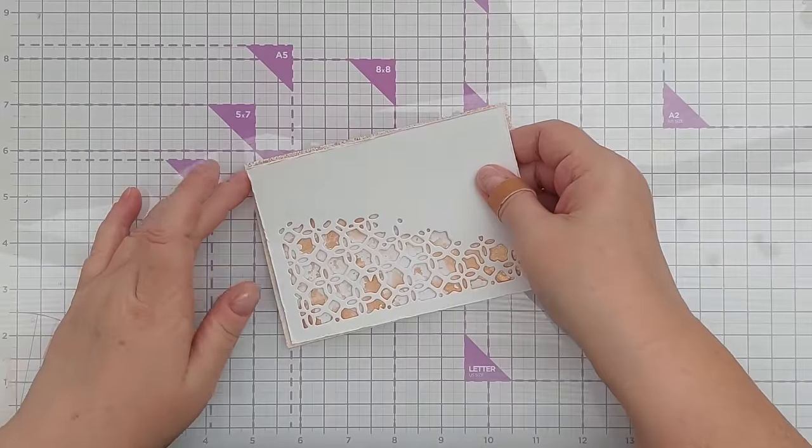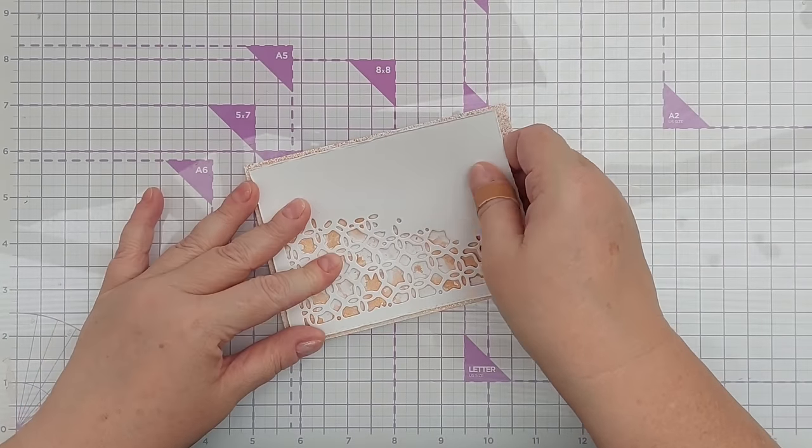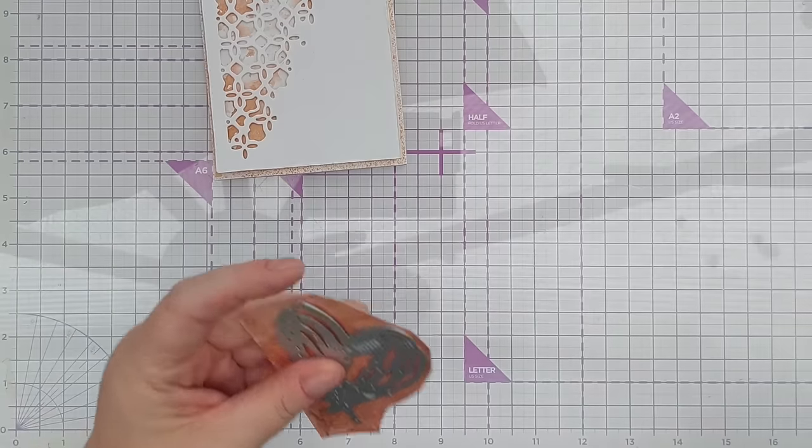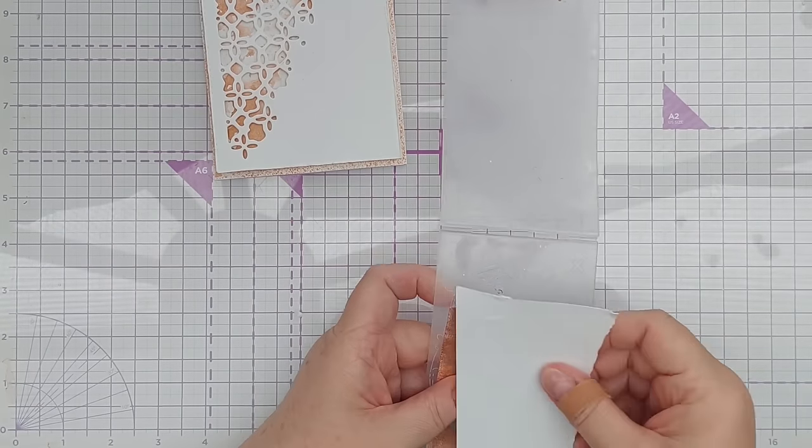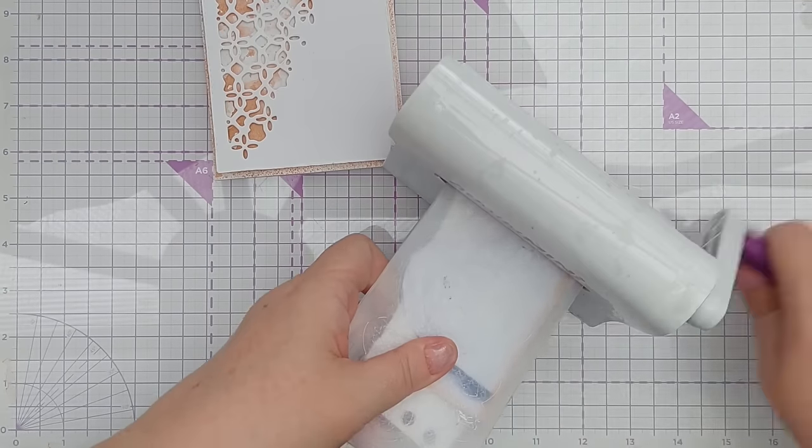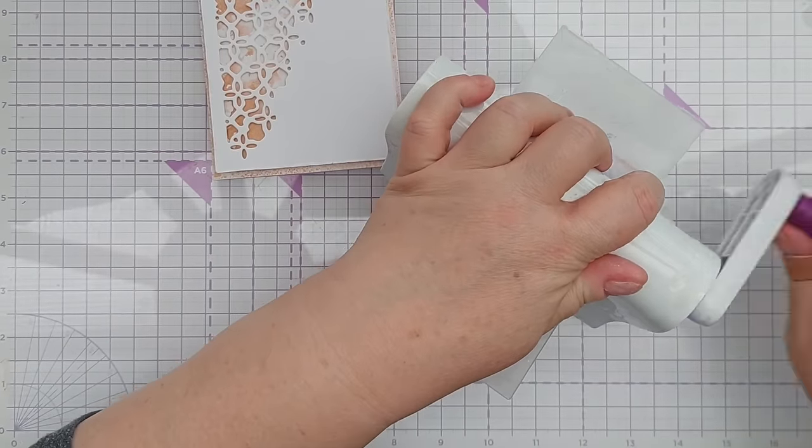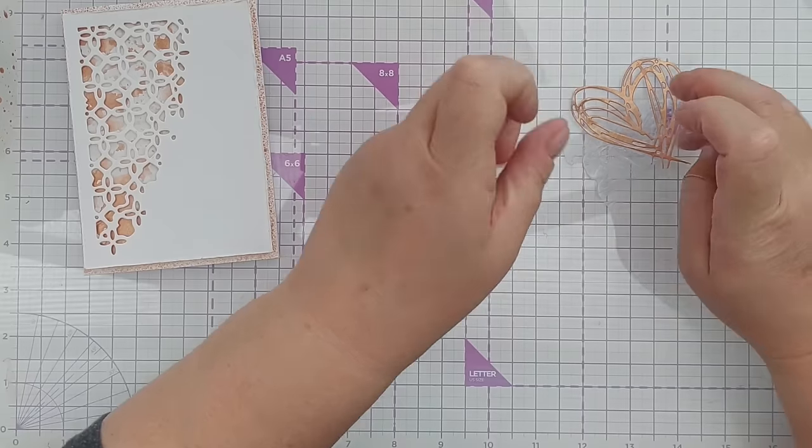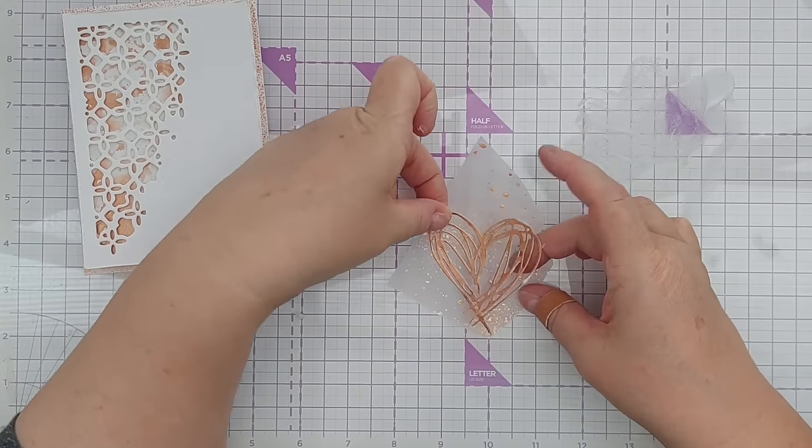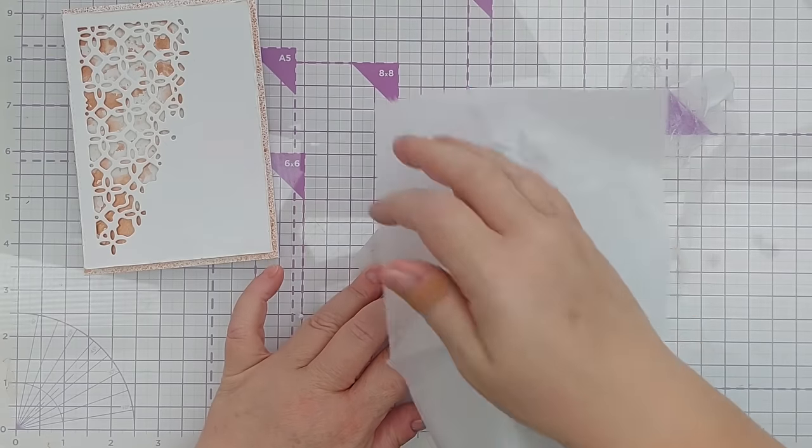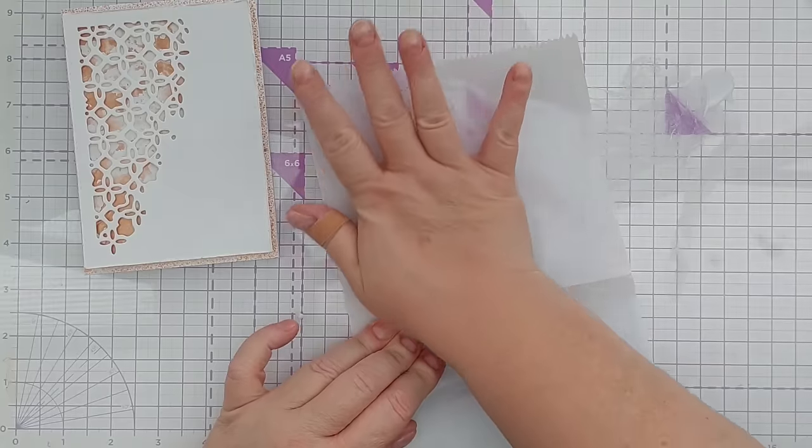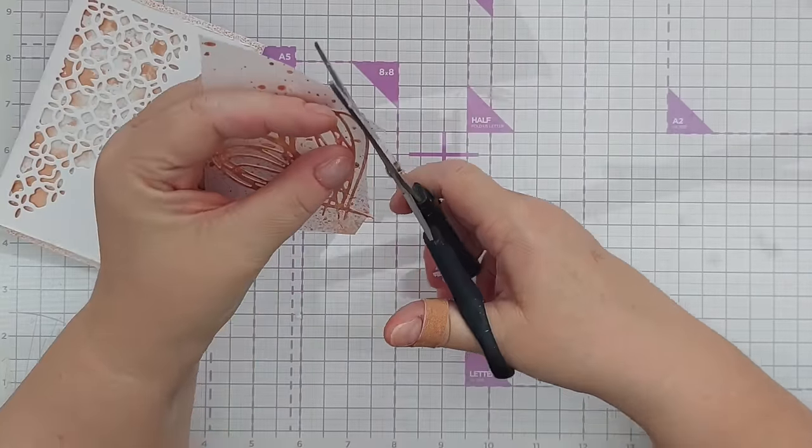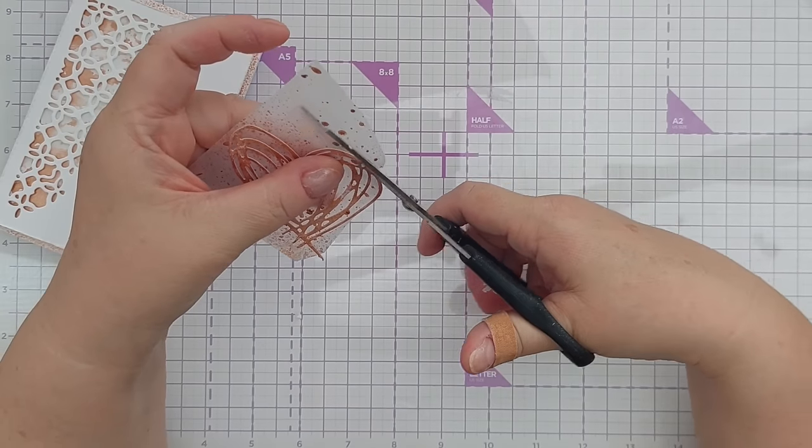For my focal point I took the DIY shimmery cardstock that I made and die cut from it an outline heart—I think this is a Tim Holtz Sizzix heart die. I dipped that in some matte gel medium and then stuck it on a piece of the vellum that I had spritzed and dripped on. I pressed that down with a piece of deli paper just to get the glue to stick really well. Once it's stuck I trimmed the heart out with my scissors, so now I've got a shimmery heart backed with some shimmery vellum.